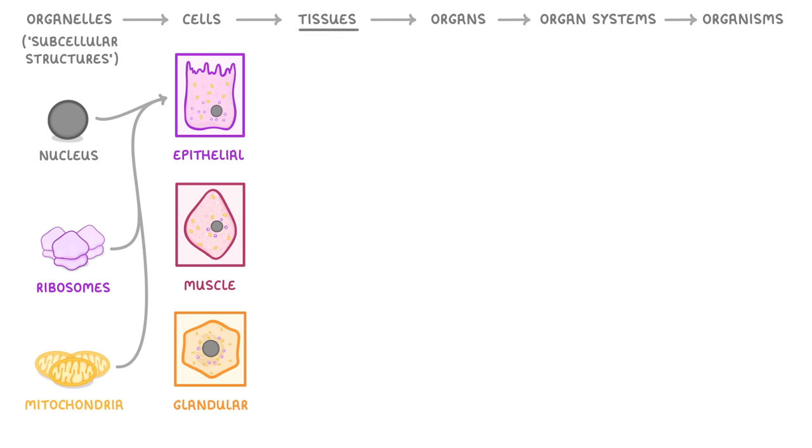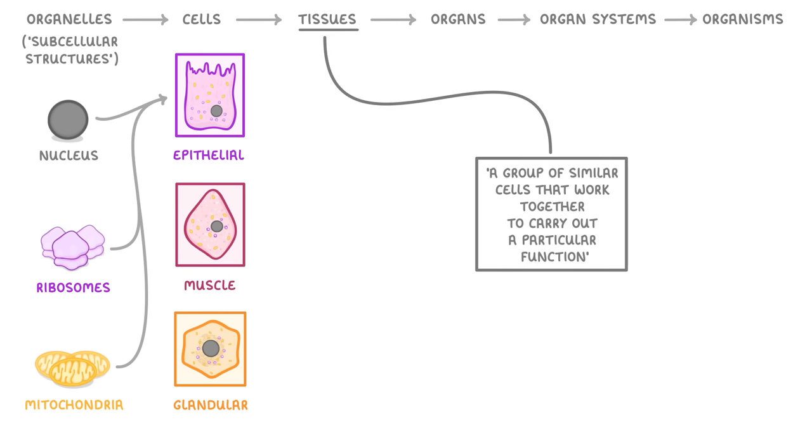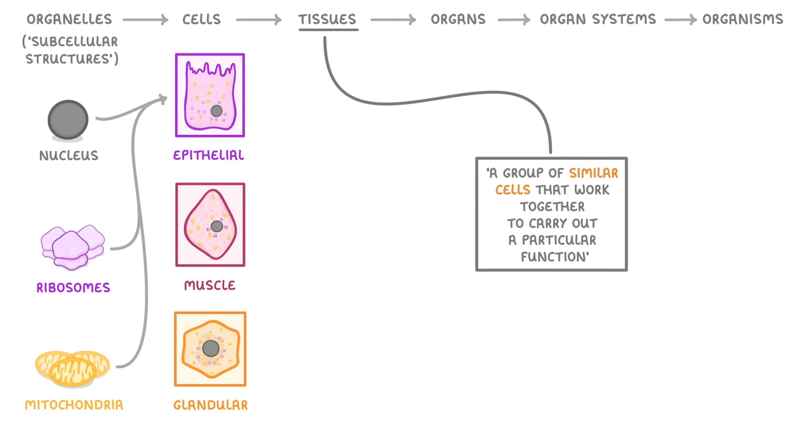Next up, we have tissues, which we can describe as a group of similar cells that work together to carry out a particular function. For example, lots of epithelial cells would form epithelial tissue, which together have the function of covering the body's surfaces, like our skin or the inside of our intestines.